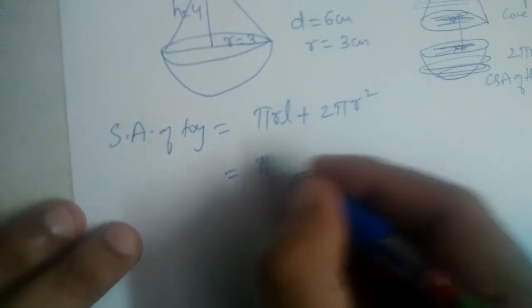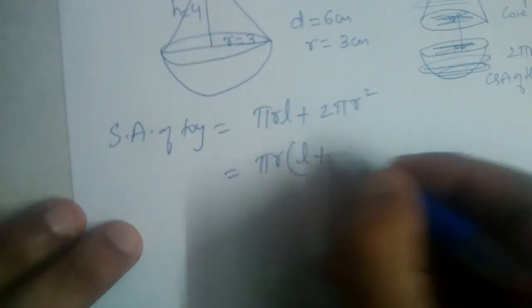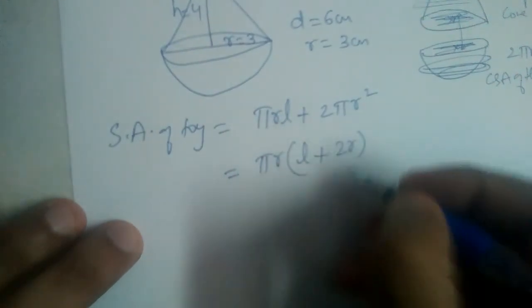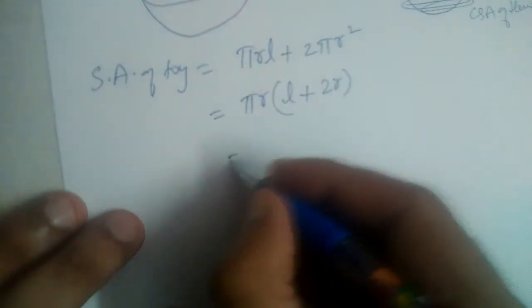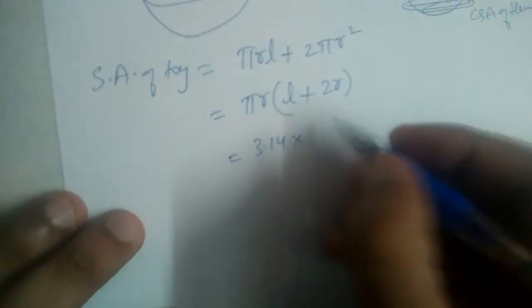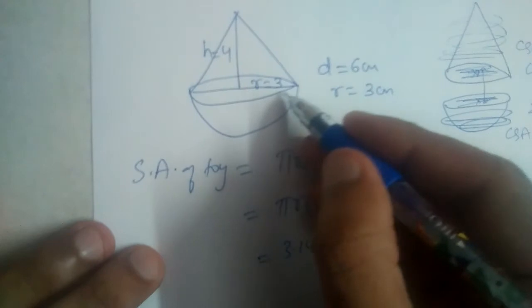πrl plus 2πr². Take πr common here: l plus 2r. If you take πr, 2r will be left. Now π is 3.14 into r, r is equal to 3, so 3 into l.